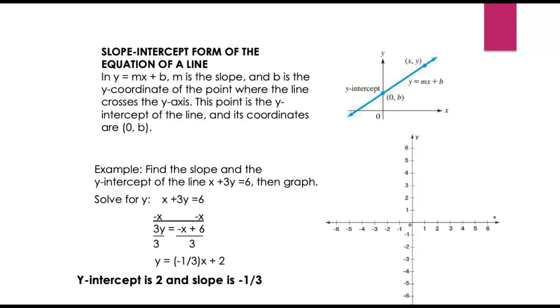For an example, suppose we have this line that was given, x plus 3y equals 6. That satisfies that definition for a linear equation. So what we want to do is take this line and solve for y. We want to make it look like our slope intercept form, y equals mx plus b.